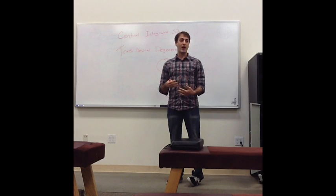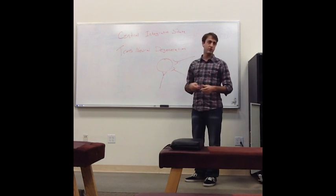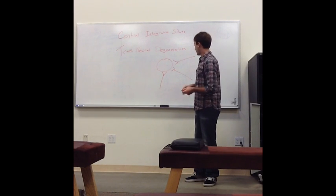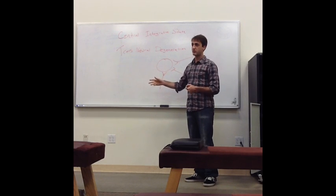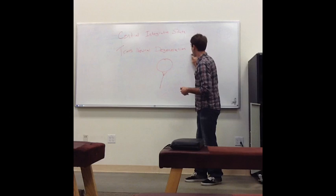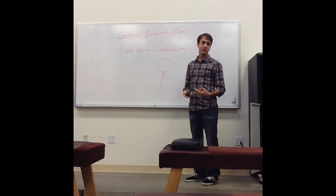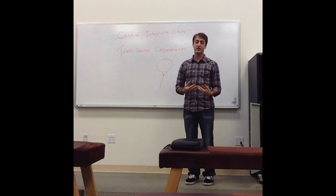When you start getting into transneural degeneration, you're lowering the central integrative state. You have less synapses coming onto this neuron. So this one is inactive, this one is inactive, and now he's just not getting the stimulus that he's used to. So what happens is he starts declining, he's just activated less.